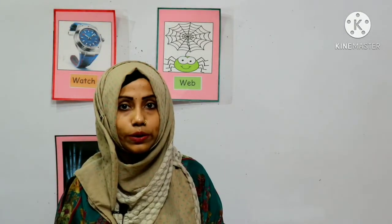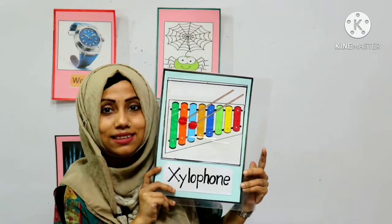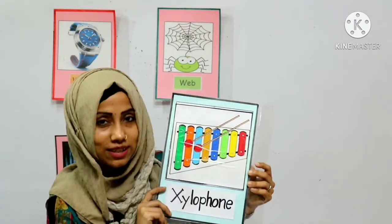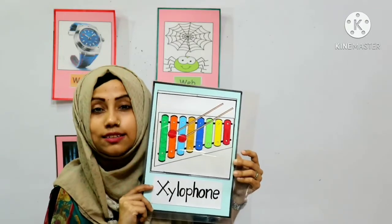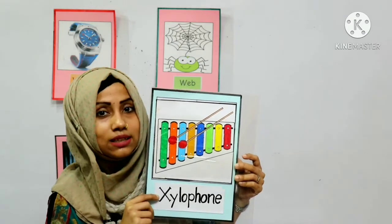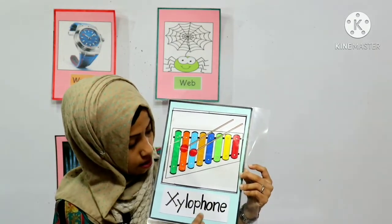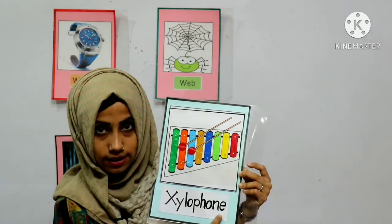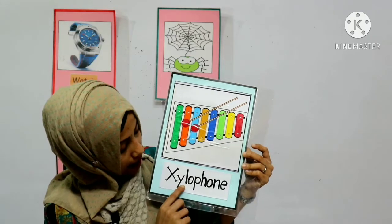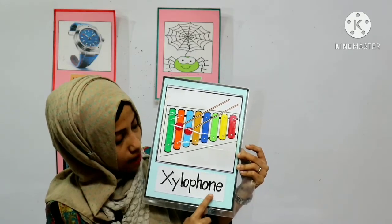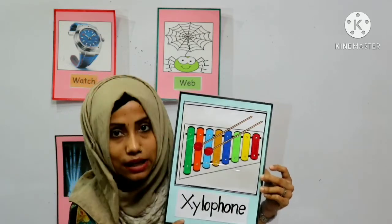Let's see another word with letter X. What is this? It's too colorful, right? It's called xylophone. X-Y-L-O-P-H-O-N-E. Xylophone. What is this? Xylophone.